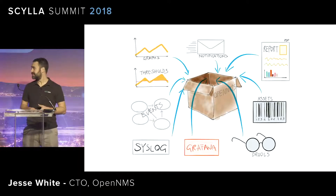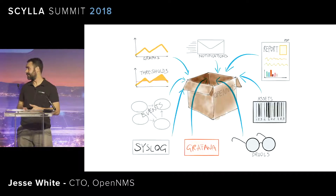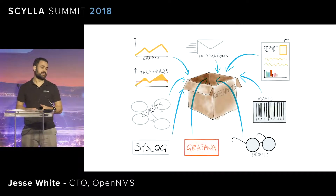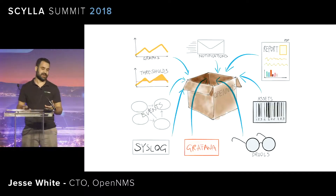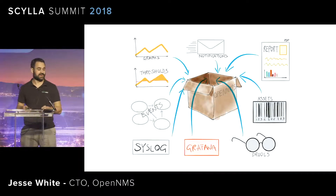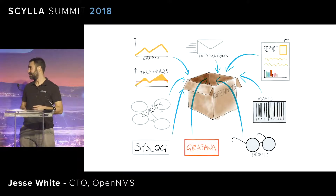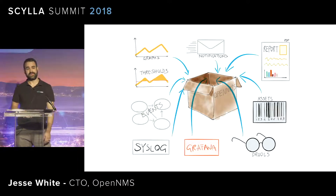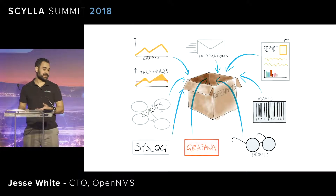Some of the features that OpenNMS has: we support receiving events from various sources — for example, syslog messages — parsing those, turning them into faults if they match certain criteria, and generating notifications based on those. We also support reporting for SLA violations and things like that.